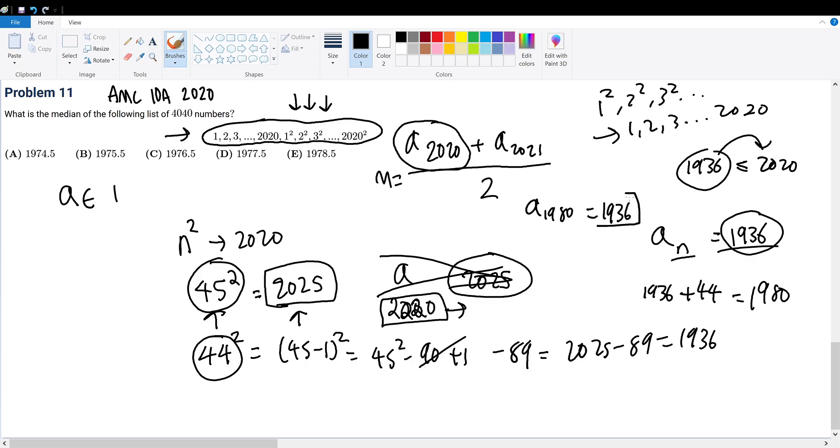And since 1936 is below 2020, meaning it's within the 1, 2, 3, all the way to 2020 range or sequence, we can just simply add 40 to the term number to get 2020 and add 40 to 1936 to get 1976 to get the result for the 2020th term.